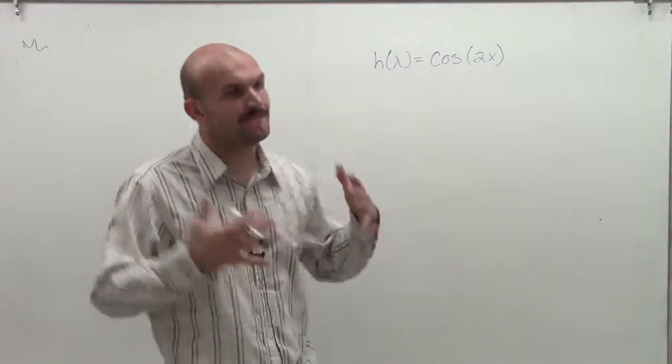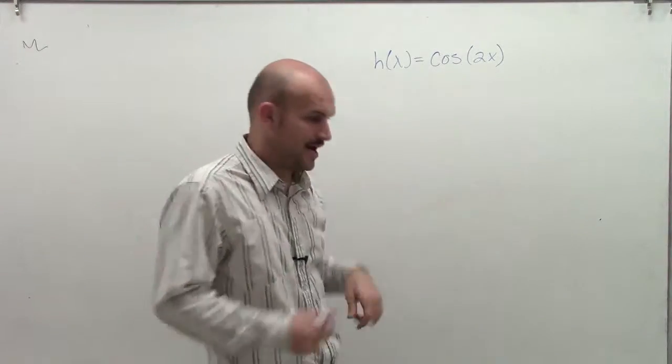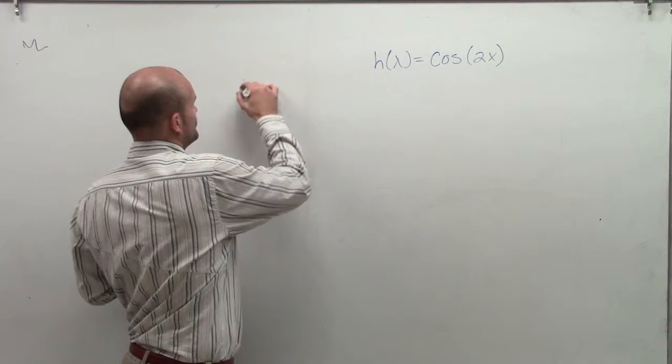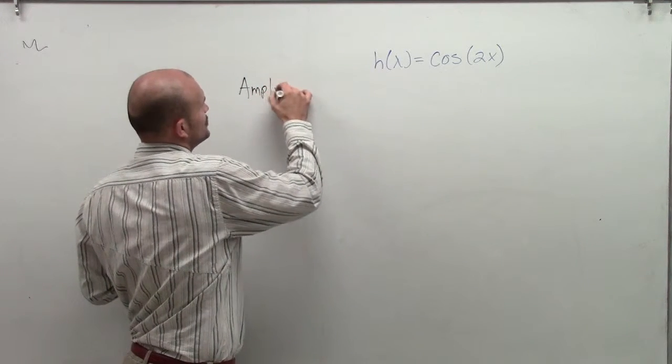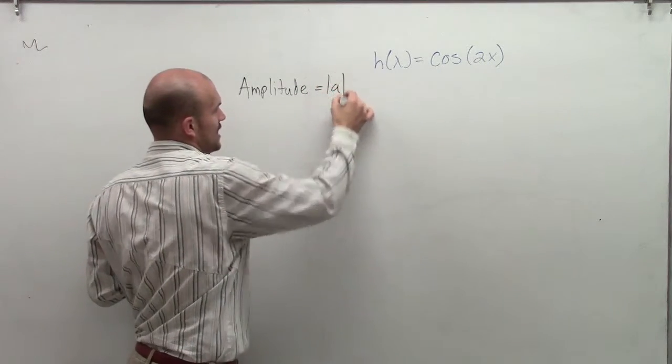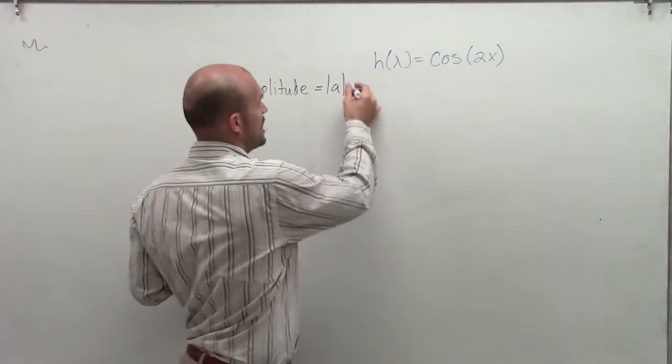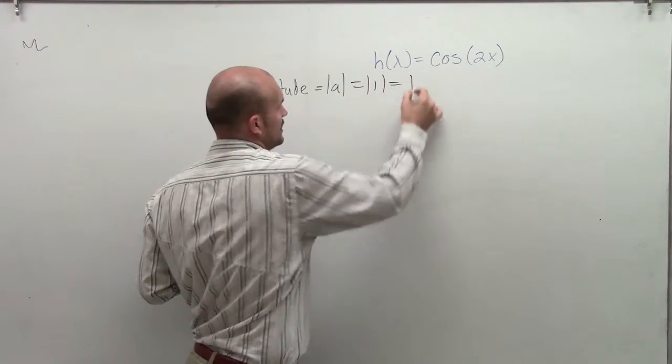What we're going to do is refine all those points with our transformation of 2x. The first thing I want to do is look at the amplitude and see if it has changed from the parent graph. The amplitude is the absolute value of a, which in this case is 1, so the absolute value of 1 equals 1.